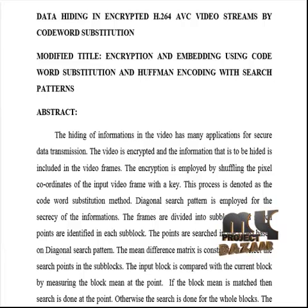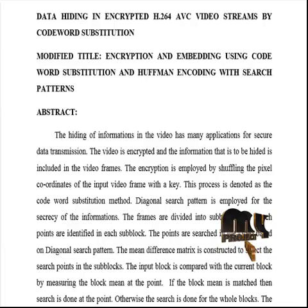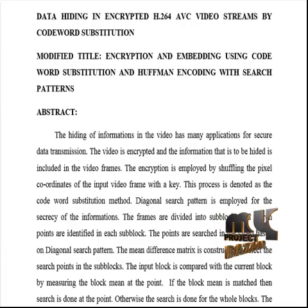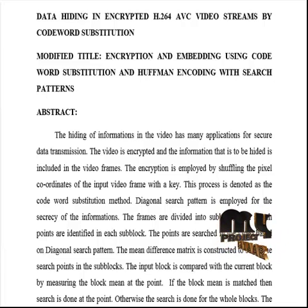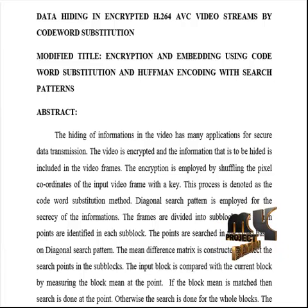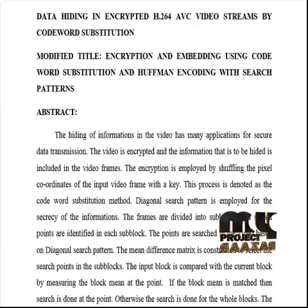A mean difference matrix is constructed to select points in the sub-blocks. The input block is compared with the current block by measuring multiple block models at that point. If the block mean is matched, the search is done at that point; otherwise the search is done for the whole block. This process is repeated until the search is done over all frames in the video. The encoding process employs Huffman transformation so that the encrypted bits are reallocated and the original information cannot be retrieved without the authorized key.